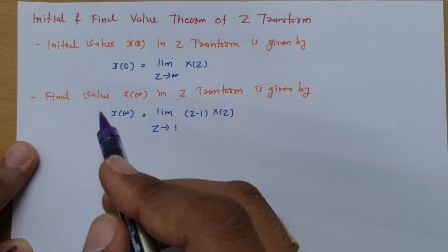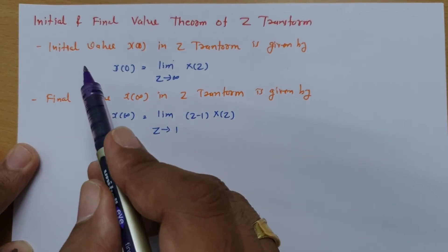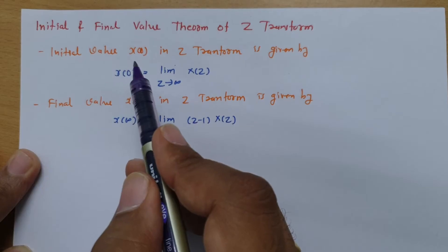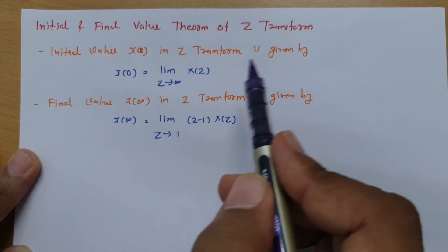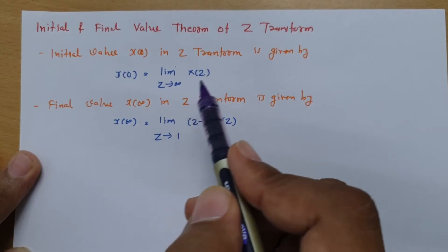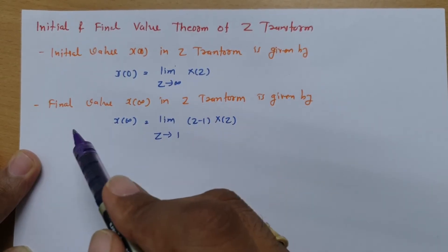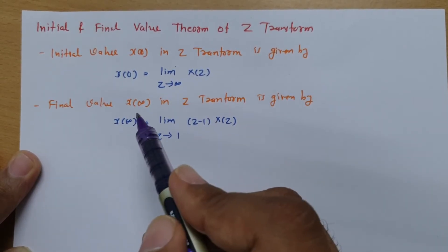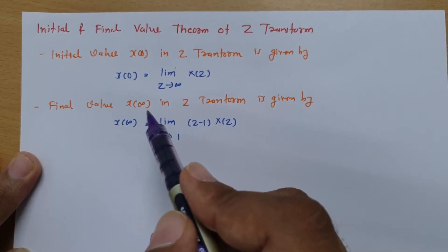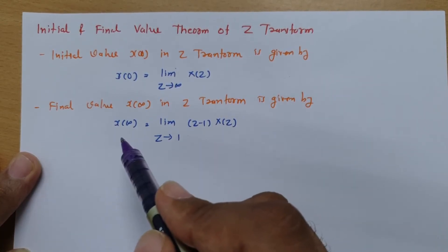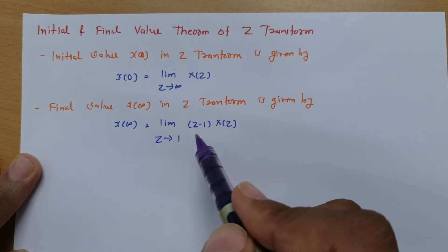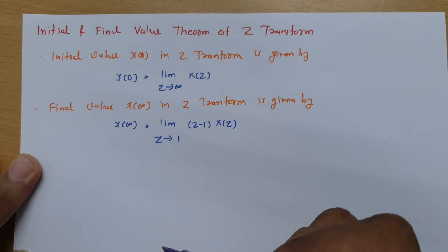To explain that, we have signal X of n, and the initial value of it is X of 0. In Z-transform, it is given by X(0) = lim(Z→∞) X(Z). The final value — the value of signal X(n) at infinite time — is X(∞), given by X(∞) = lim(Z→1) (Z−1)·X(Z).